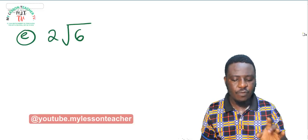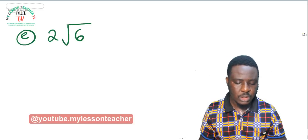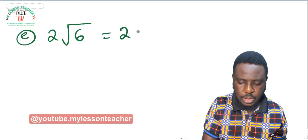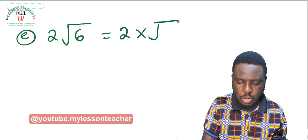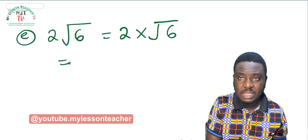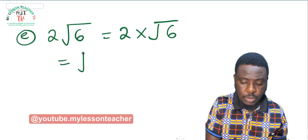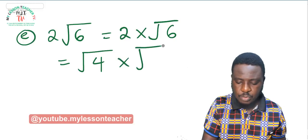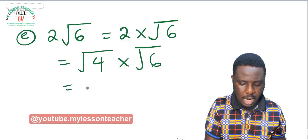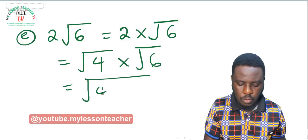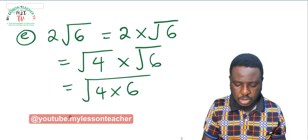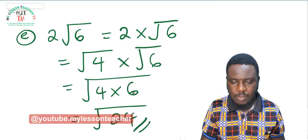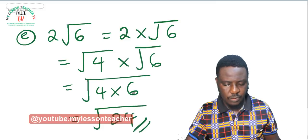Example E: 2 root 6. This can be written as 2 times root 6. Since root 4 equals 2, this becomes root 4 times root 6, which simplifies to root of 4 times 6. 4 times 6 is 24, so the answer is root 24.